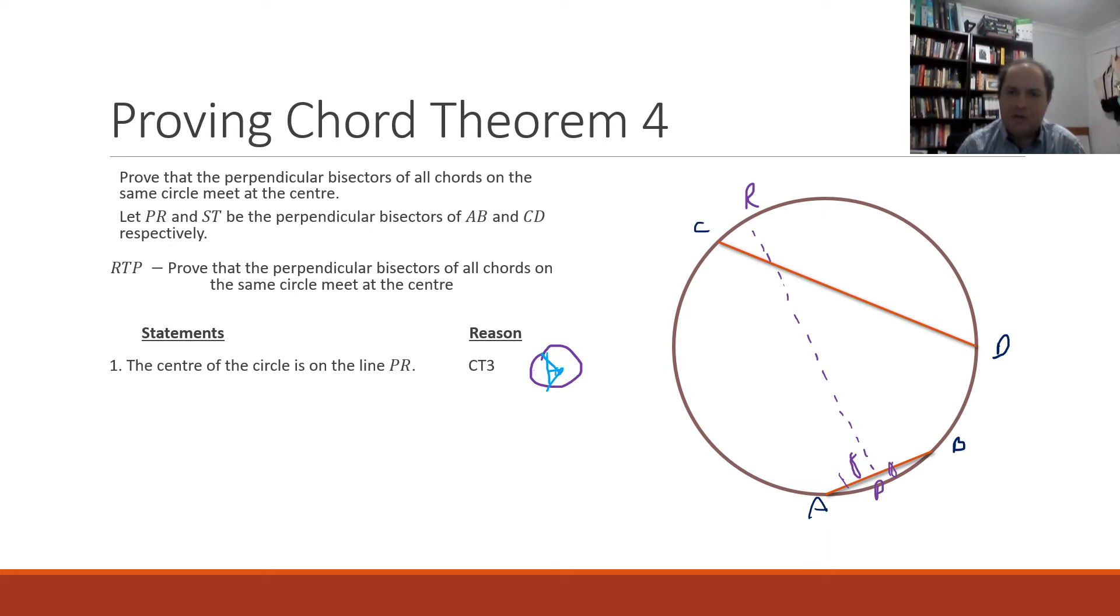Now just from this chord we don't know where on our line the center is, but we can say for certain that the center of our circle is somewhere on this perpendicular bisector because that was proved in our chord theorem three.